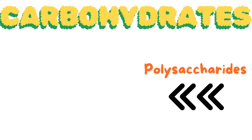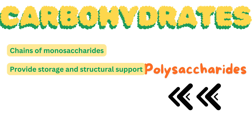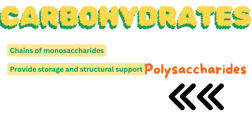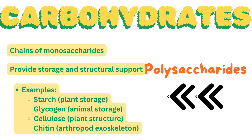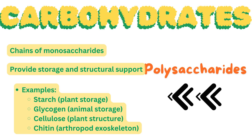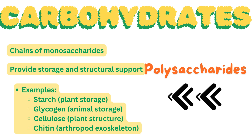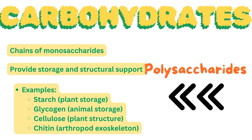Polysaccharides are chains of monosaccharides, providing significant storage and structural support in both plants and animals. Common examples include starch, a storage carbohydrate in plants consisting of glucose units; glycogen, the animal equivalent of starch providing energy when needed; cellulose, an unbranched polymer in plant cell walls that is indigestible by humans; and chitin, found in the exoskeleton of arthropods, providing strength and protection.